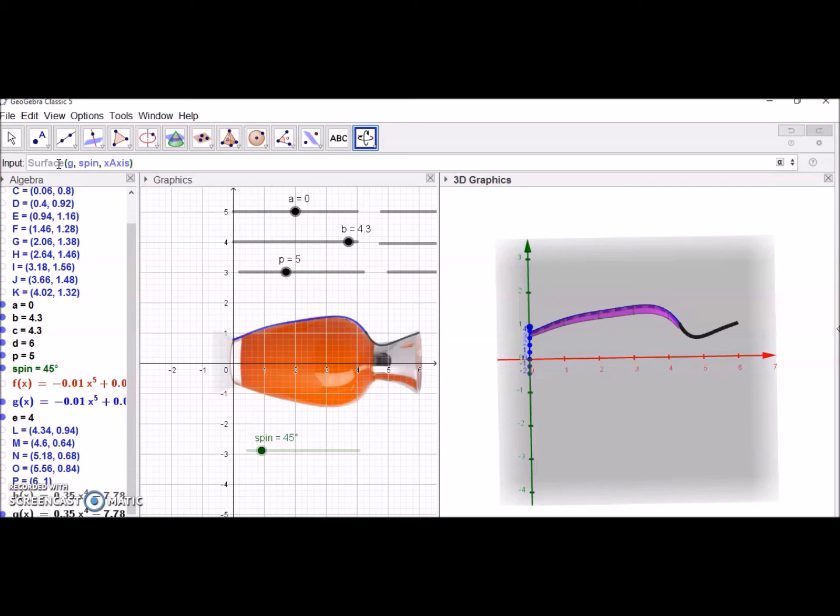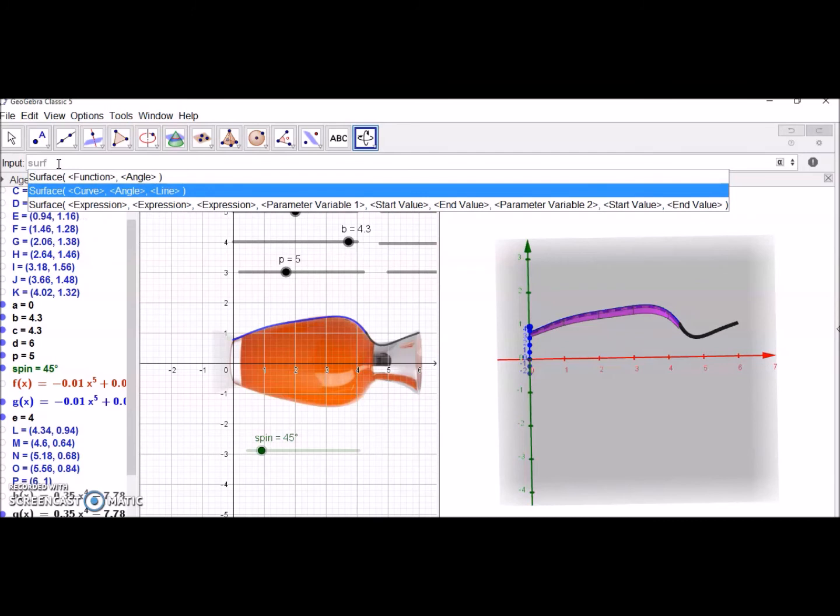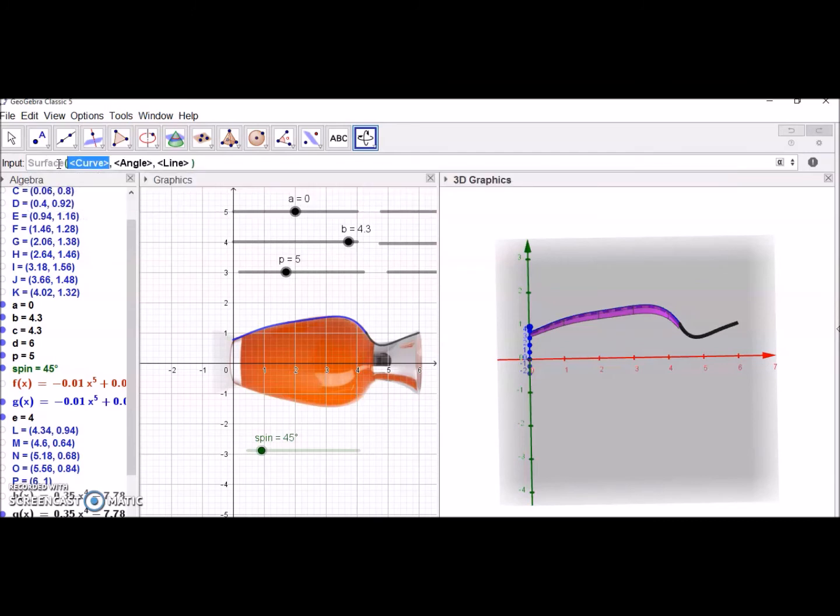For the first part, then the second part we'll do the same. Another time surface, choose the other function for the second part which is q. Spin is the rename of angle along x-axis. Once you press enter, remember spin is the angle of rotation, x-axis is the principal axis of rotation.